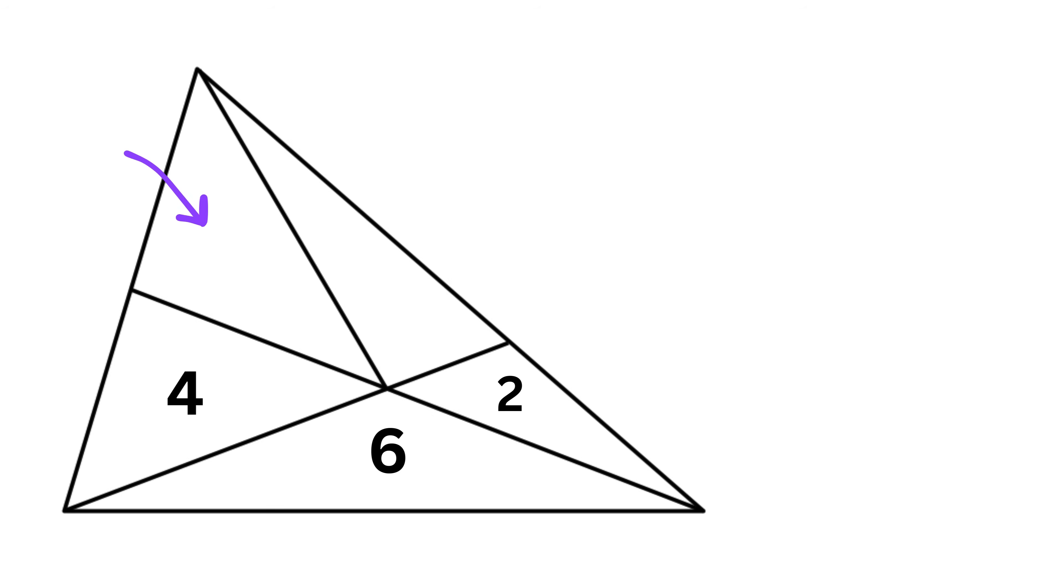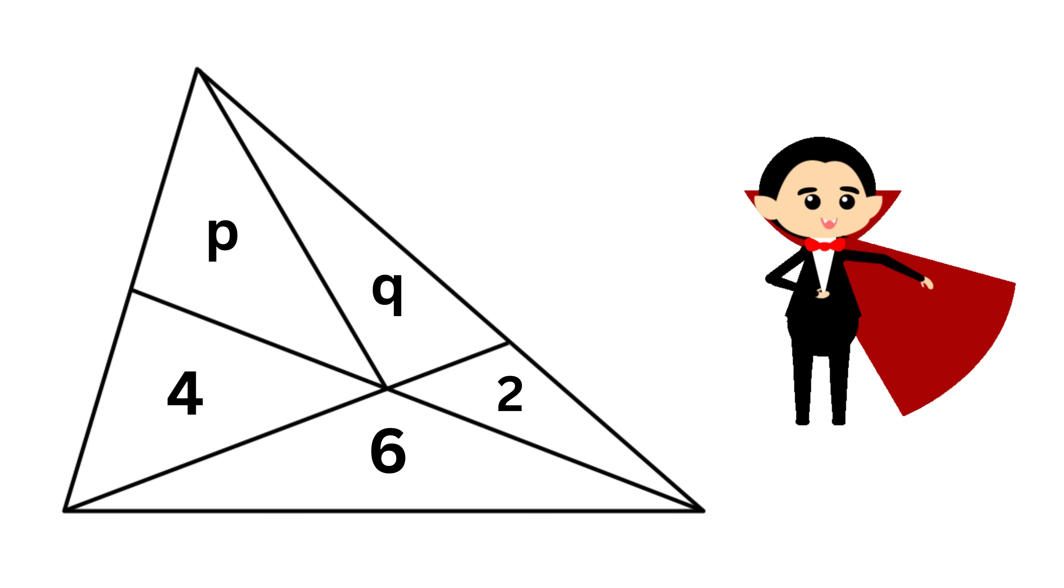I will give this triangle's area a name. I will call it P. I could call it whatever I want. You can even use another letter. Then, I will call this triangle's area as Q. Now, are you ready for some magic?